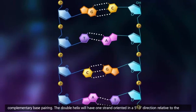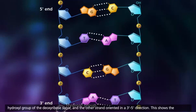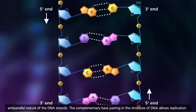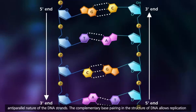The double helix will have one strand oriented in a 5' to 3' direction relative to the hydroxyl group of the deoxyribose sugar, and the other strand oriented in a 3' to 5' direction. This shows the anti-parallel nature of the DNA strands.